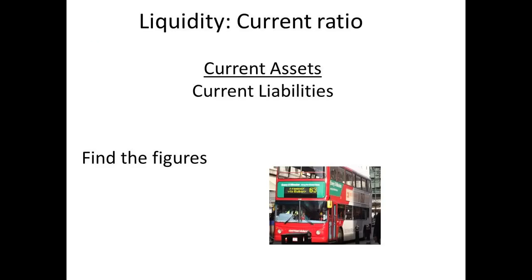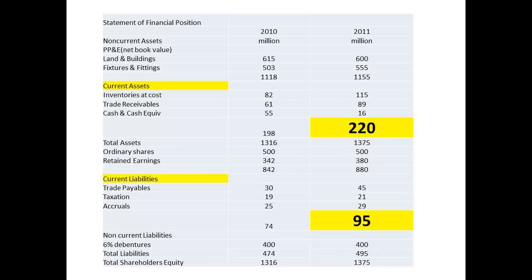The ratio for liquidity that we are interested in is called the current ratio. It is obtained by dividing the figure for current assets by the figure for current liabilities. These figures can be obtained from the balance sheet.